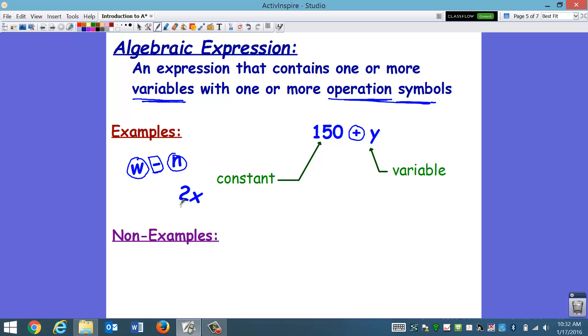What about this? This is read 2x. We just talked about this. A number next to a variable with no operation symbol in between. That means that it is multiplication. We're not going to read it 2 times x. And you can say that. But the way we read it is just 2x. That means two groups of x. So this is also an expression because the operation, even though you don't see the symbol, is multiplication.